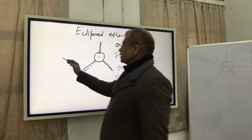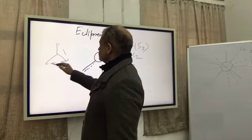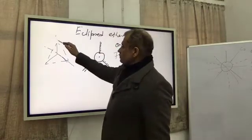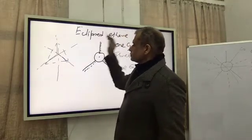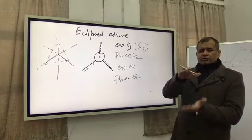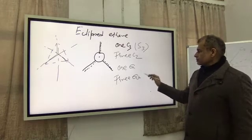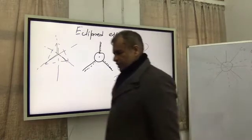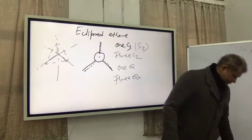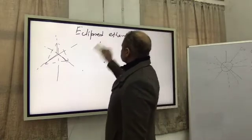Because for any triangle, you can see there is a vertical plane, another vertical plane, another vertical plane — three sigma vertical planes. The plane that acts for the upper triangle will also act for the lower triangle. So you have three sigma vertical planes. These are the symmetry elements of the eclipsed form. Now if we go for the staggered form.